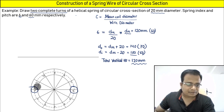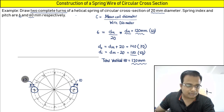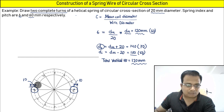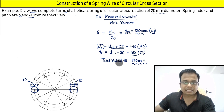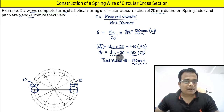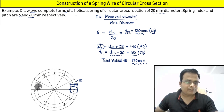Looking at the top view carefully: from the mean diameter point, adding 10 mm on each side gives 20 mm total, and 20 + D_mean gives the outer diameter. Subtracting 10 mm on each side gives D_mean − 20, which is the internal diameter. This explains why D_outer = D_mean + 20 and D_inner = D_mean − 20.